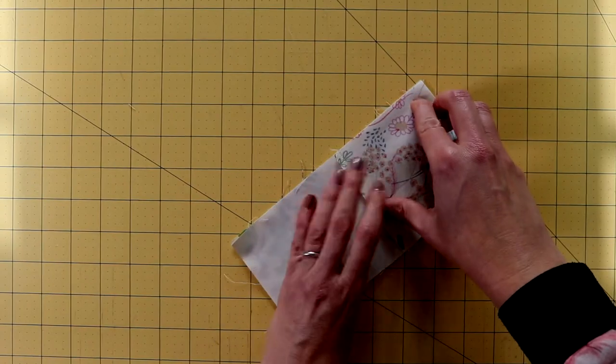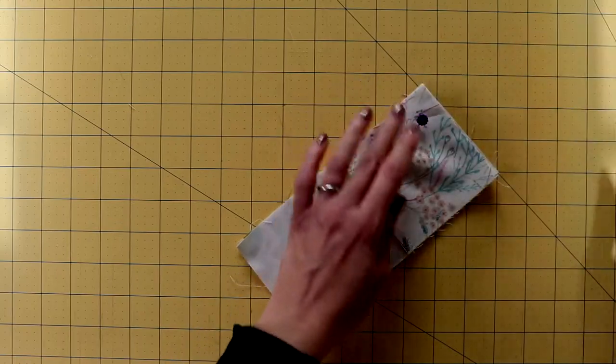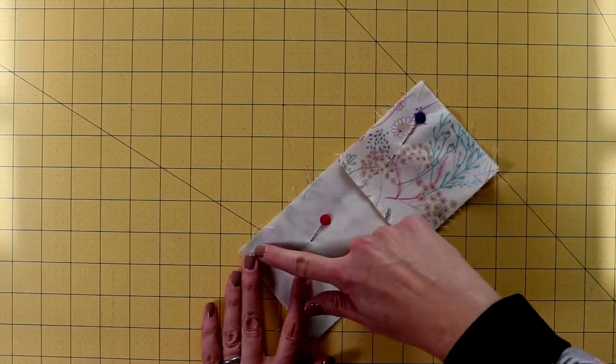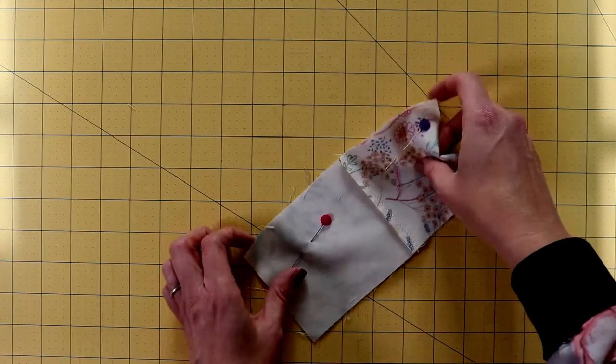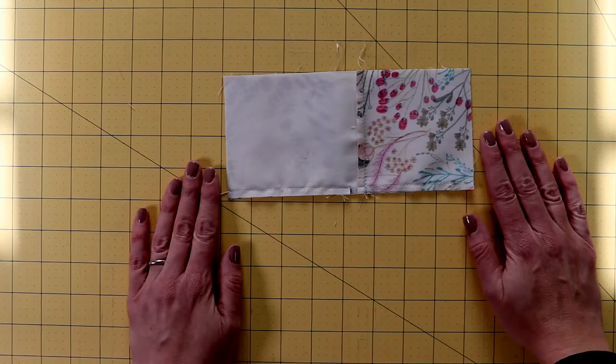So I'm just going to pick one. You might want to pin it together a little bit. Then you're going to sew another ¼ inch seam just along one of these sides. Then you end up with this piece.